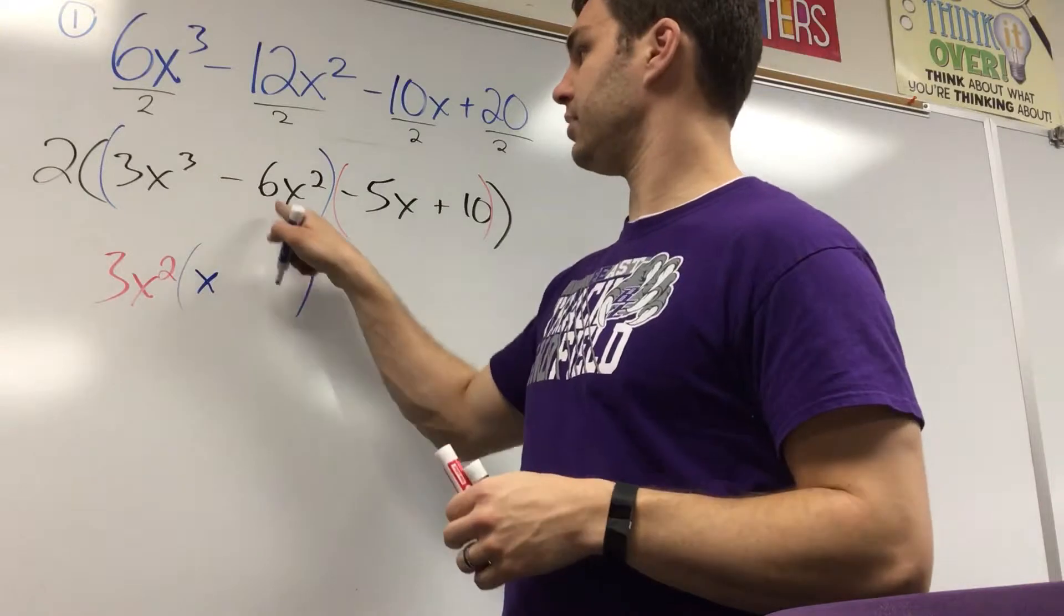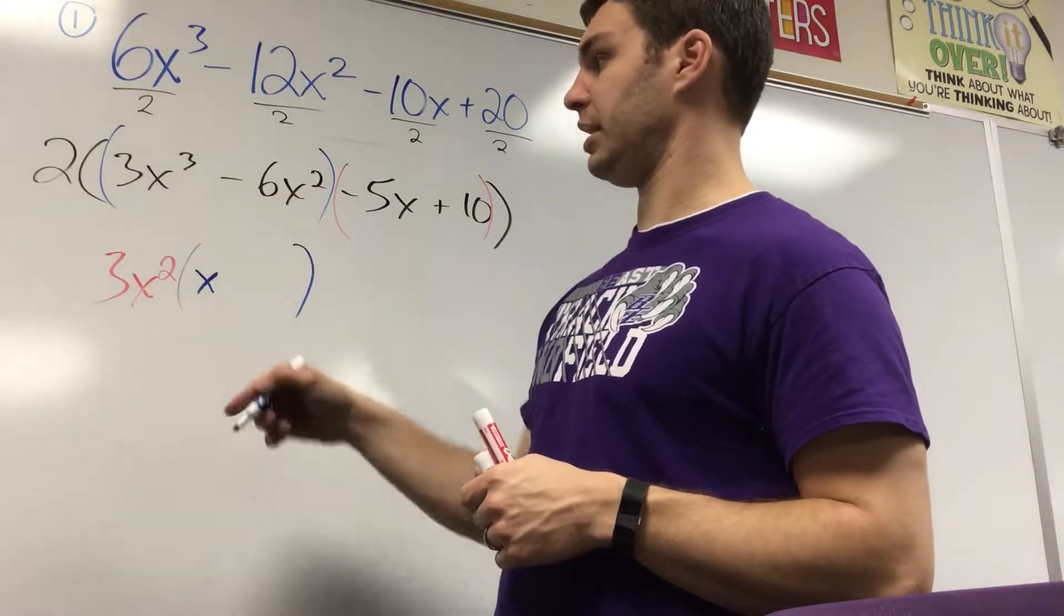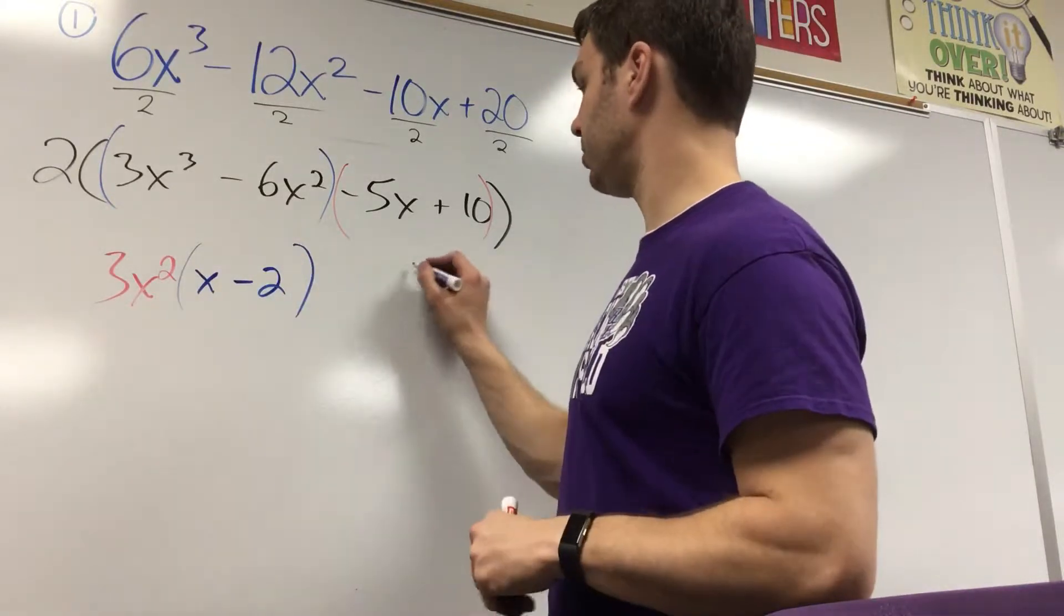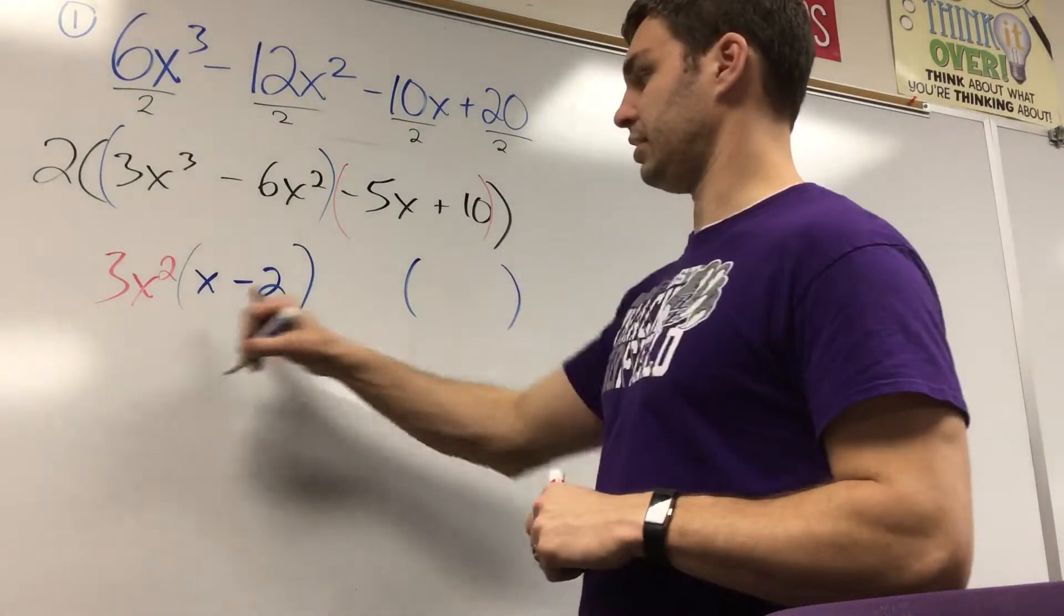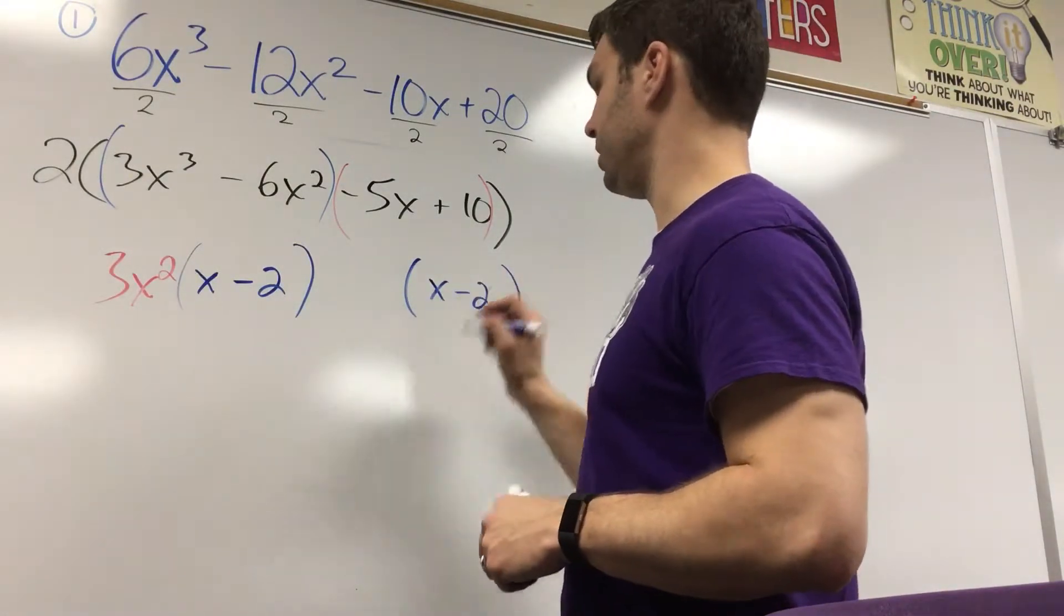Negative 6x squared divided by 3x squared. The x squareds are going to cancel, so negative 6 divided by 3 is just negative 2. Remember that I really want this second parentheses to be the exact same. So I'm going to put x minus 2 in there.